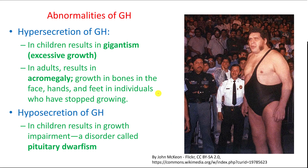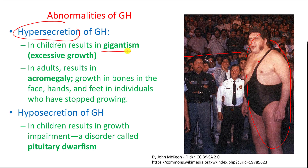Sometimes we get abnormalities in the growth hormone. Hyper-secretion — overproduction of the growth hormone — in children would result in something called gigantism, which means a huge body structure. Those are the average people, but with hyper-secretion of growth hormone during childhood, a person gets gigantism. Since the growth hormone targets bone and muscle cells, this is the result. There is nothing wrong with the person; it's just a big body mass.